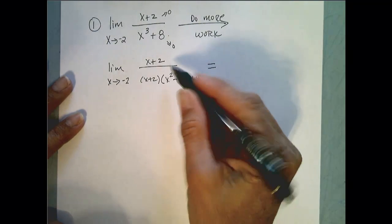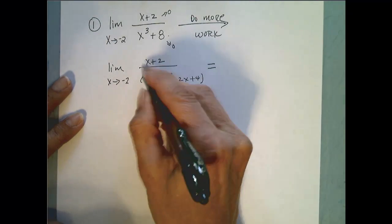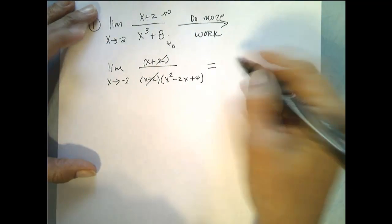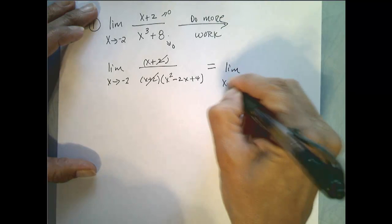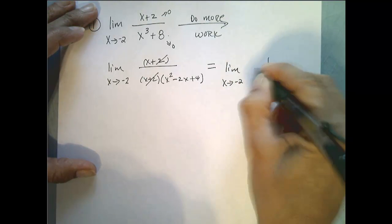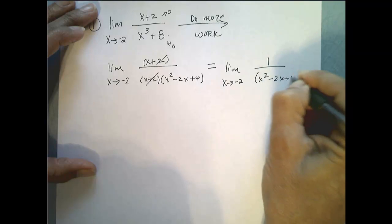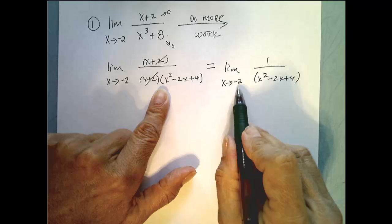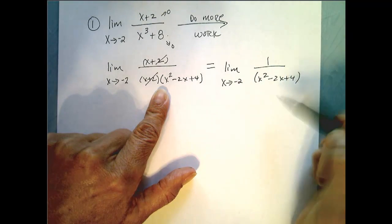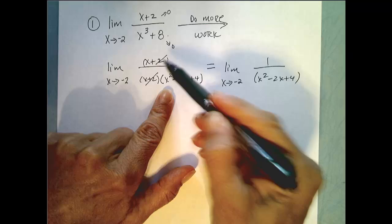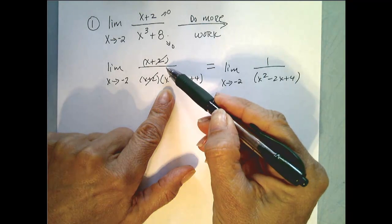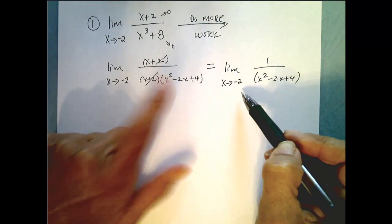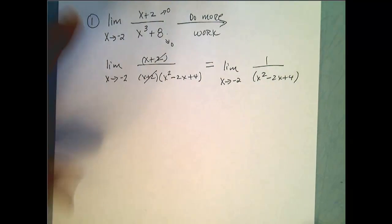So now what we can do is we can cancel because this limit is equal to this limit because these functions are equivalent everywhere except at negative 2. They're not equivalent when x is negative 2 because this is undefined at negative 2. But remember the limit is what happens as we get near negative 2, not when we are at negative 2. So these limits are equivalent.